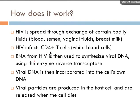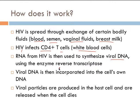How does HIV work? HIV is spread through the exchange of certain bodily fluids, including blood, semen, vaginal fluids, and breast milk. The HIV virus affects the CD4+ T cells, also known as white blood cells. The RNA from HIV is used to synthesize viral DNA using the enzyme reverse transcriptase. That viral DNA is then incorporated into the cell's own DNA, viral particles are produced in the host cell, and then released when that cell dies. It is a retrovirus, meaning its genetic material is RNA.